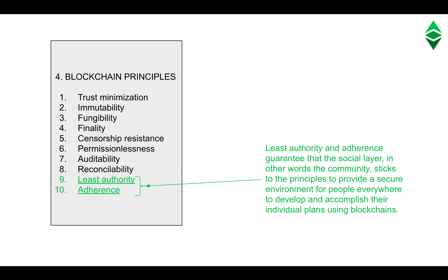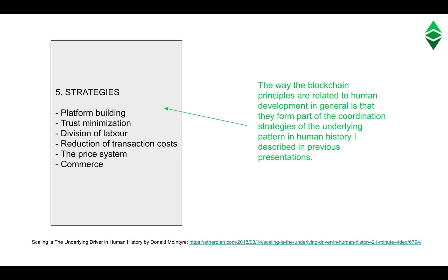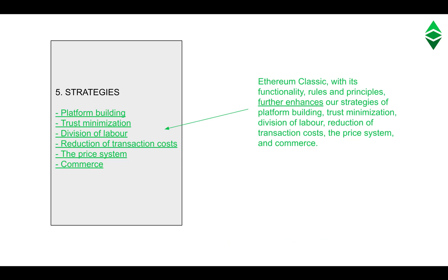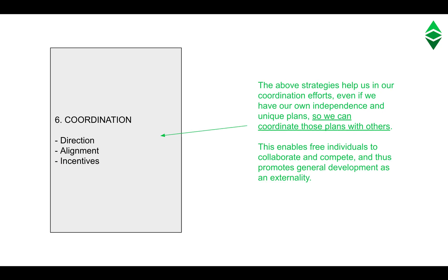Five: strategies. The way blockchain principles are related to human development in general is that they form part of the coordination of the strategies of the underlying pattern in human history I described in previous presentations. Ethereum Classic, with its functionality, rules, and principles, further enhances our strategies of platform building, trust minimization, division of labor, reduction of transaction cost, the price system, and commerce. Six: coordination. The above strategies help us in our coordination efforts even if we have our own independence and unique plans, so we can coordinate those plans with others. This enables free individuals to collaborate and compete, and thus promotes general development as an externality.